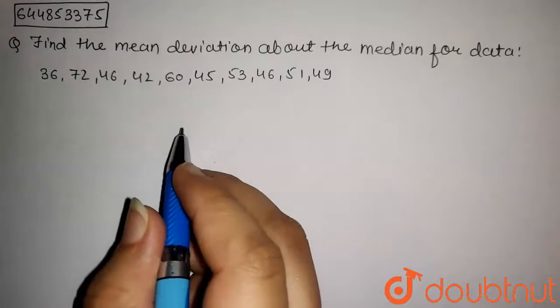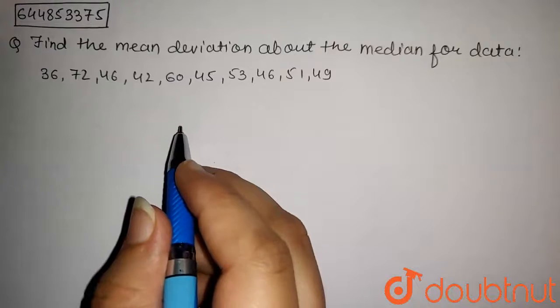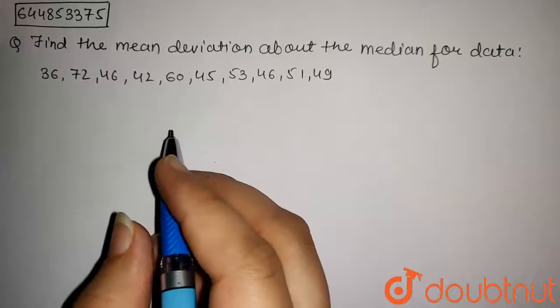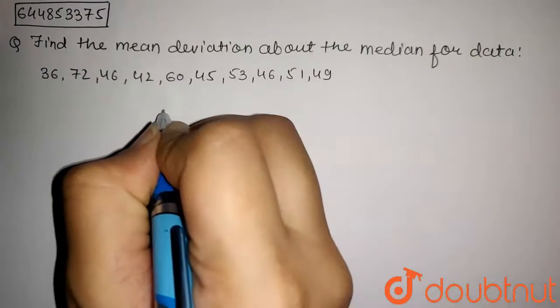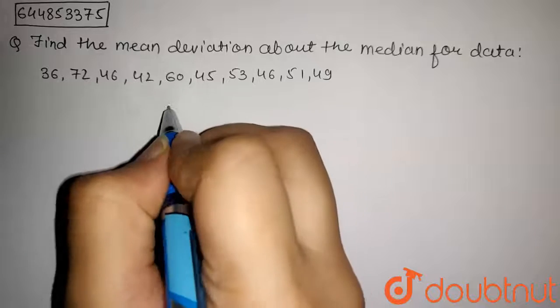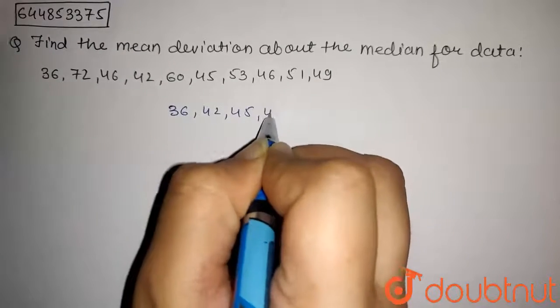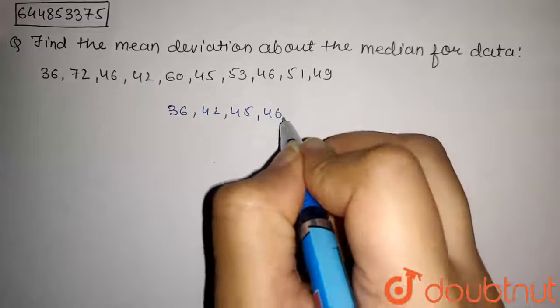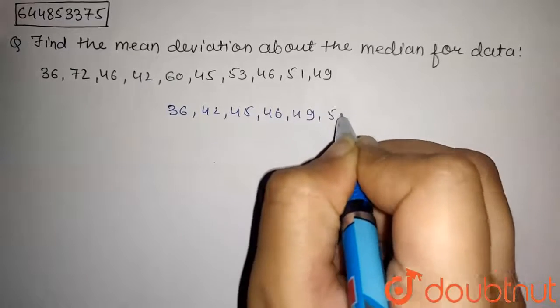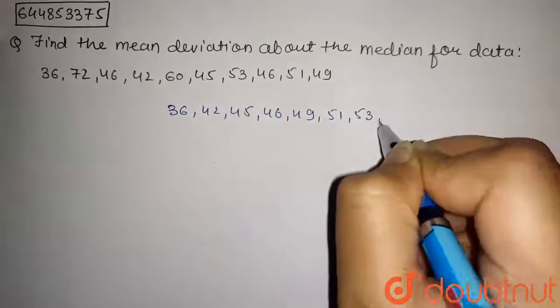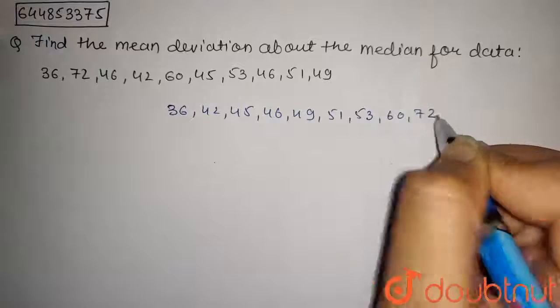Now firstly we will arrange this in ascending order to find the median. So in ascending order it will be 36, 42, 45, 46, 49, 51, 53, 60 and 72.